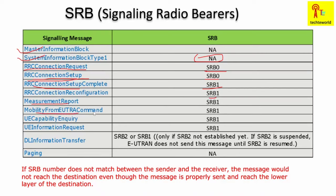Mobility From UTRA Command and UE Capability Inquiry both use SRB1, because until RRC security has been completed, we must use SRB1 — SRB2 can only be used after the security mode is complete. DL Information Transfer can use either SRB1 or SRB2: if SRB2 is not established, it uses SRB1; if SRB2 is established, it uses SRB2. Paging does not use any SRB.